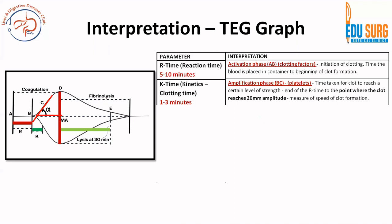The K time — between B and C — is the amplification phase. This phase depends on normal platelet function. It is the time taken for the clot to reach a certain level of strength, specifically 20 mm amplitude.